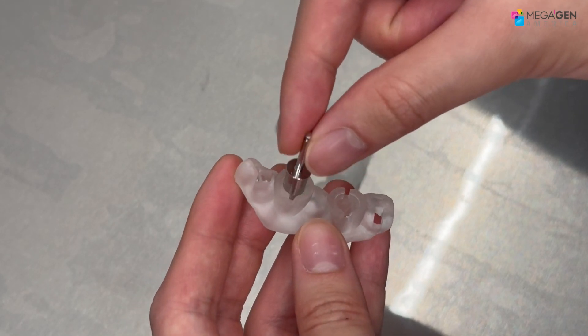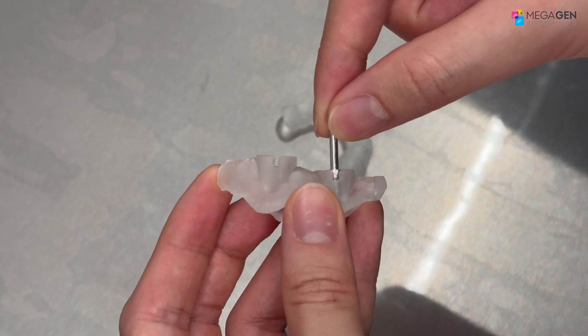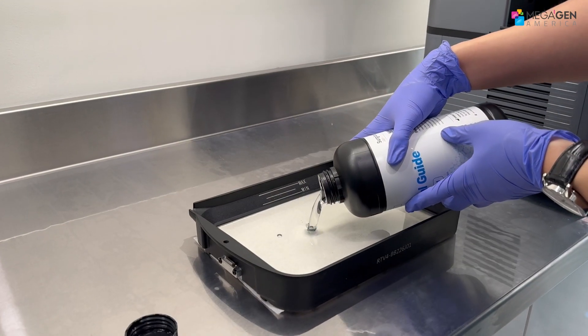I'll go straight into the process of printing out a surgical guide planned and designed from R2Gate software and printed from a Shining 3D L4D printer.